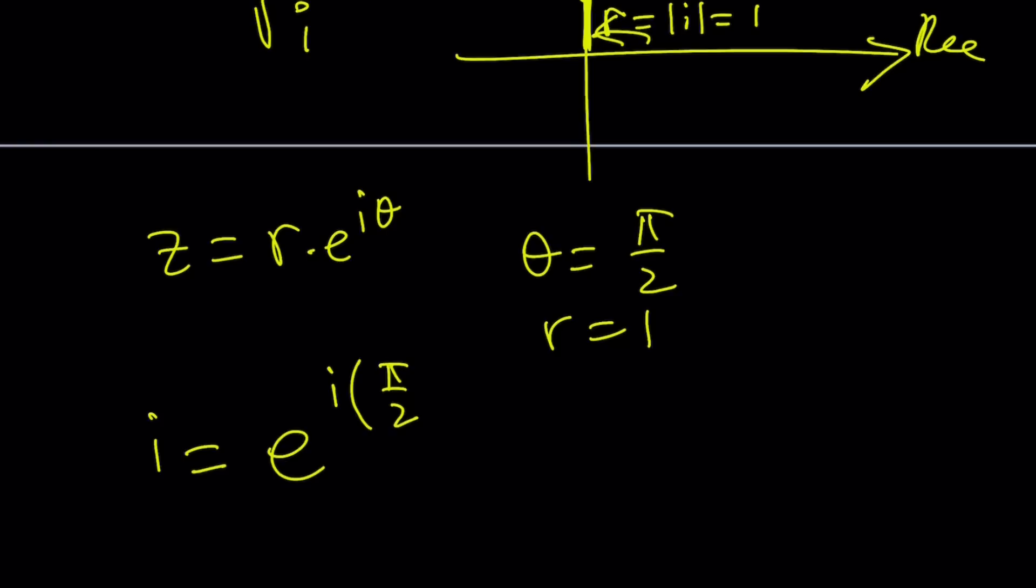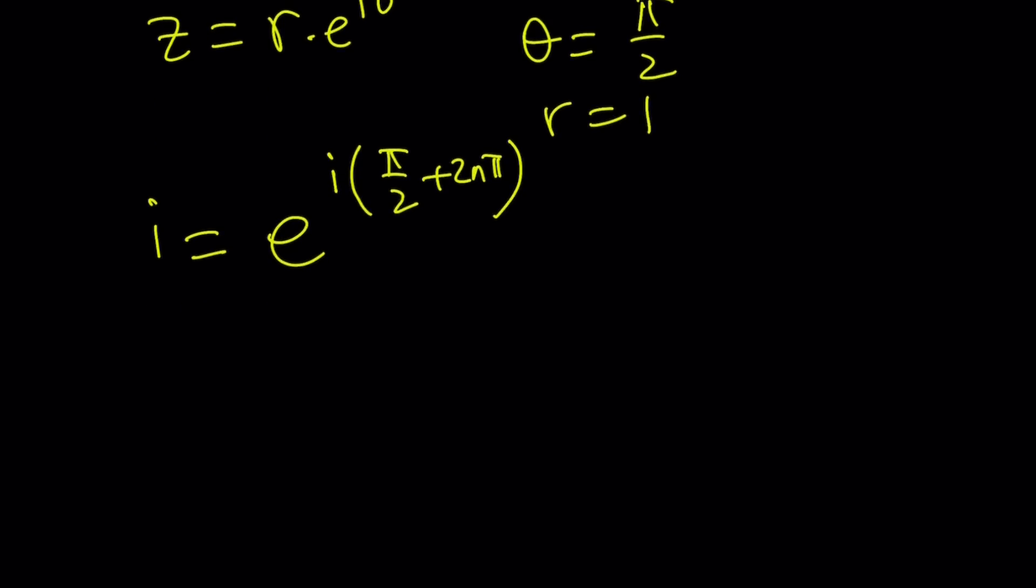can be written as e to the power i times pi over 2. But notice that I put parentheses because pi over 2 is the principal branch. If you want to write the whole thing, I would just add multiples of 2 pi to it. Make sense? Now I'm going to go ahead and take the square root. Square rooting is very easy. All you have to do is raise it to the power 1 half, which basically divides everything by 2, right? So it's going to be like this.